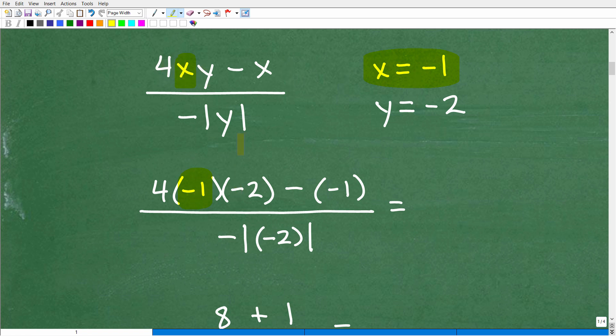Let's go ahead and use parentheses to plug everything in. So, we have 4x, again, x is negative 1, times y, y is negative 2. So, I'm plugging in that negative 2 with parentheses, minus, there's my minus sign, x, again, is negative 1. I'm plugging in with a negative 1 over negative of an absolute value of y and y is negative 2. So, I'm plugging in that negative 2 there where that y is at.